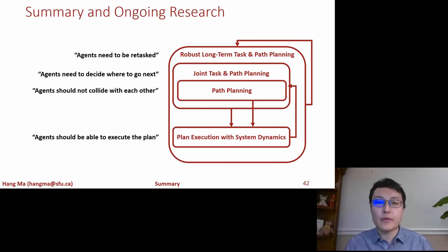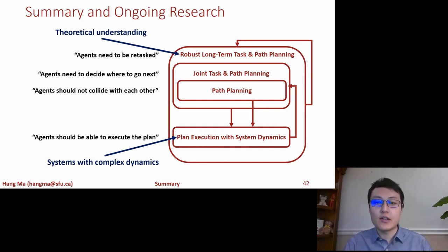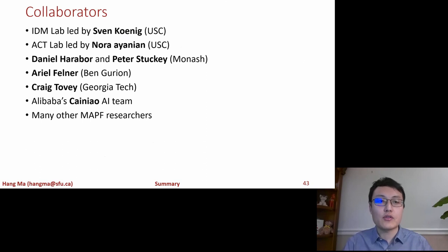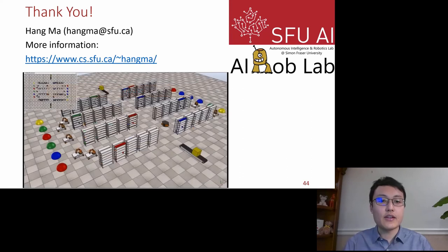And to summarize, we have contributed an algorithmic framework for coordinating long-term task and path planning operations to address a series of challenges arising in large-scale multi-agent systems. For our ongoing research, we are trying to develop a deeper theoretical understanding for long-term tasks and path planning, and we are looking to apply our algorithms to systems with high-order dynamics. With that, I would like to conclude the talk by thanking my collaborators, Sven Koenig, Nora Ayanian, Daniel Harabor, and Peter Stuckey, and Ariel Felner, Craig Tovey, and Alibaba's Cainiao AI team, and also many, many other MAPF researchers. And that's it. Thank you for listening to my talk.